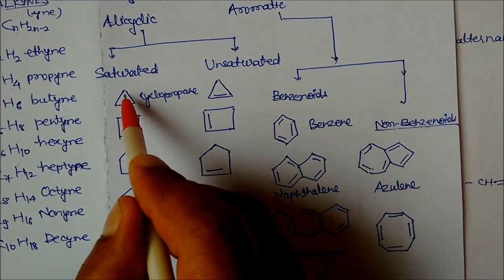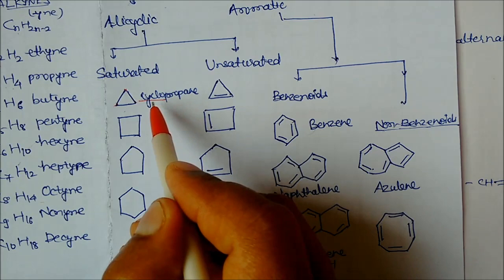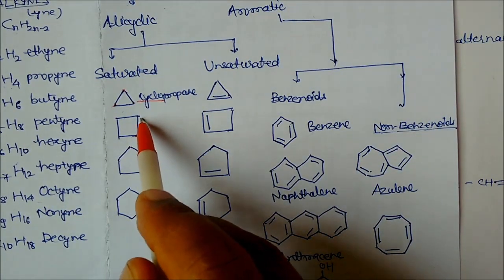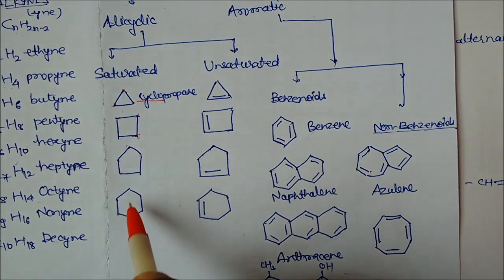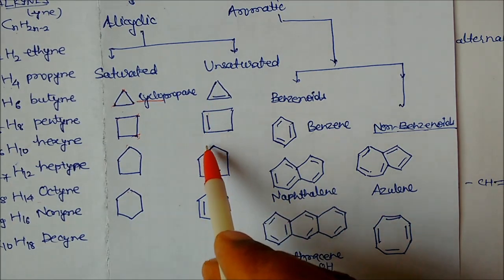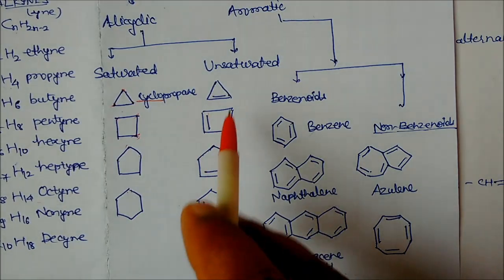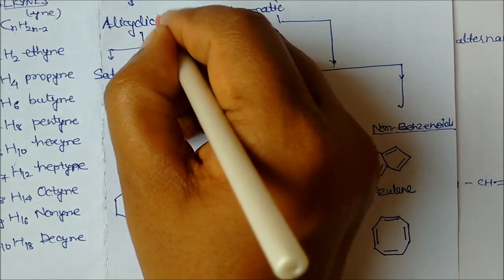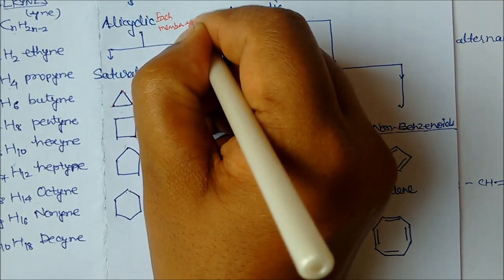In bond line notation, a three-carbon ring is cyclopropane (1, 2, 3 carbons with the prefix 'cyclo'). A four-carbon ring is cyclobutane, a five-carbon ring is cyclopentane, and a six-carbon ring is cyclohexane. If a double bond is placed in the ring, it becomes unsaturated but still alicyclic, because each ring member contains only carbon.